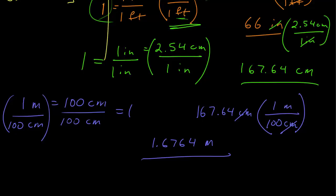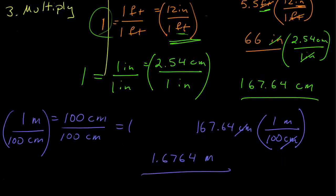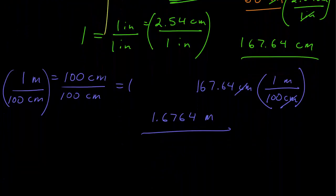And so if I have significant figures, what am I left with? Two significant figures maybe, so maybe I'm left with 1.7 meters to the correct number of significant figures.